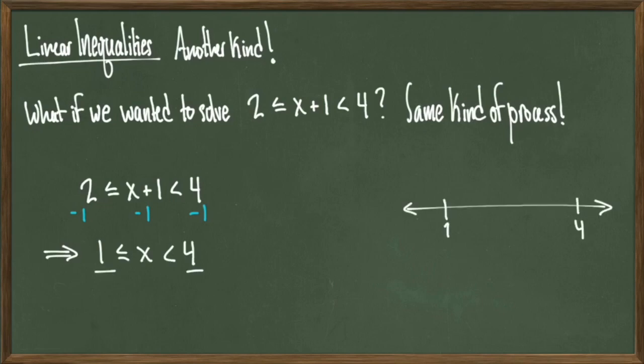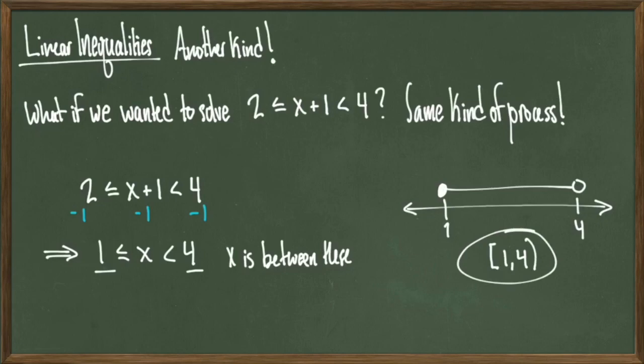My endpoints, 1 and 4, will go on the number line, and then I make the observation that this inequality is telling me that x sits between 1 and 4. So I can draw on the number line like this, with a filled in circle over 1 and open circle around 4, which gives me the interval that is closed at 1 and open at 4 as my final answer.